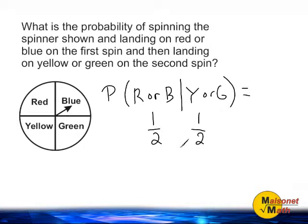After writing the probability of each event occurring, you must multiply those probabilities together. One times one is one and two times two is four. So the probability of landing on red or blue with the first spin and yellow or green on the second spin is one fourth.